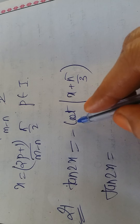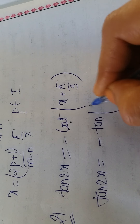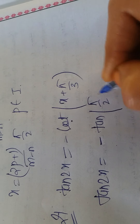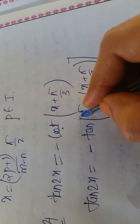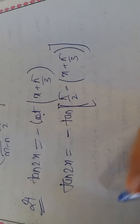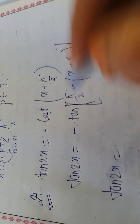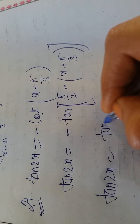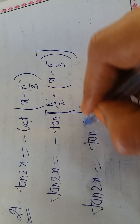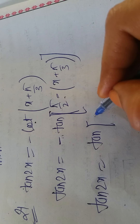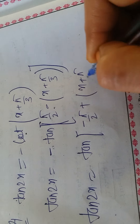First convert cot to tan: -cot(x + π/3) = -tan(π/2 - (x + π/3)). Since minus·tan(θ) = tan(-θ), the minus sign can be taken inside: this becomes tan(-(π/2 - x - π/3)) = tan(-π/2 + x + π/3).